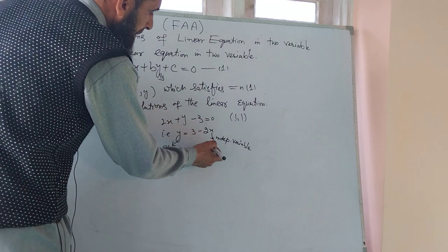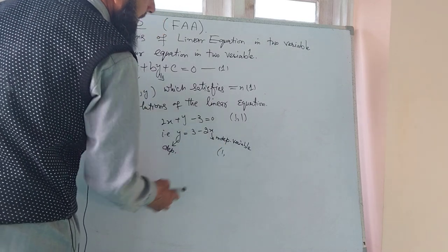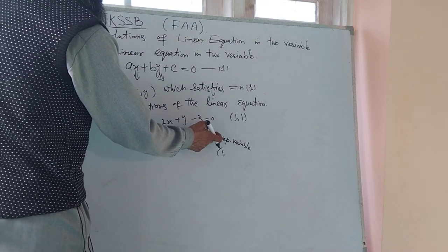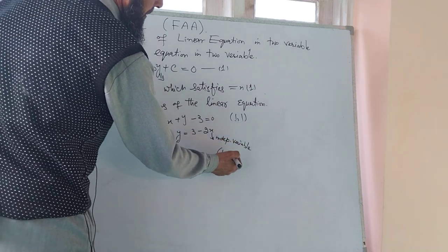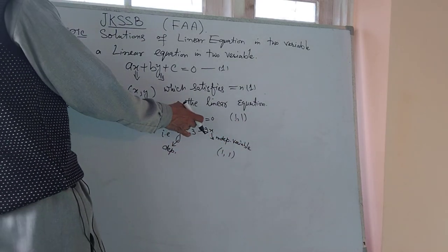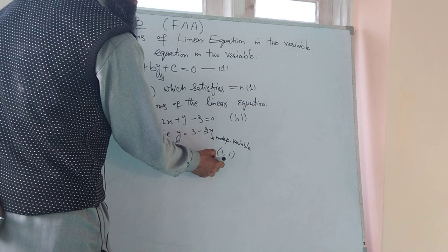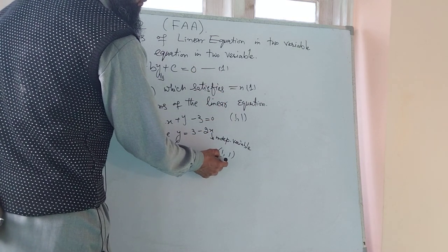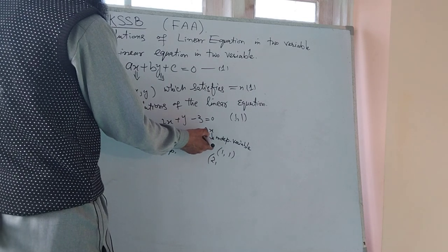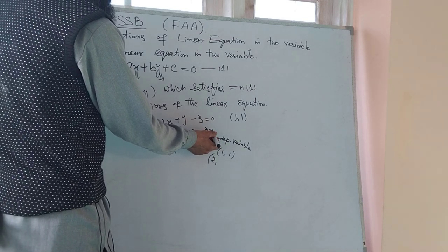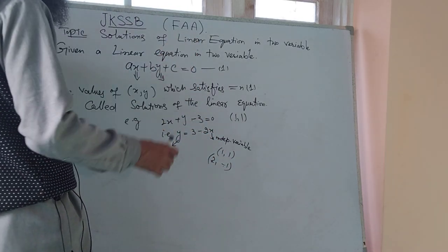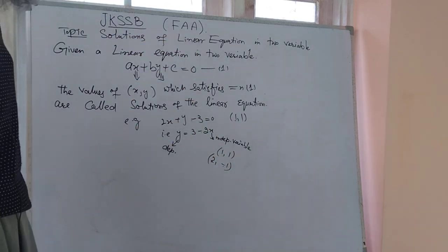For example, when X equals 1: 2 into 1 gives 3 minus 2, which equals 1. So (1, 1) is a solution. When X equals 2: 2 into 2 gives 3 minus 4, which is minus 1. So (2, minus 1) is another solution. This shows there are infinitely many solutions.